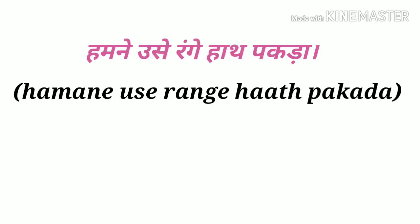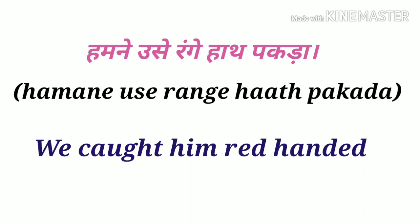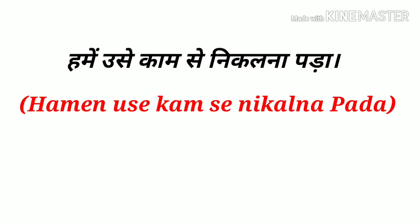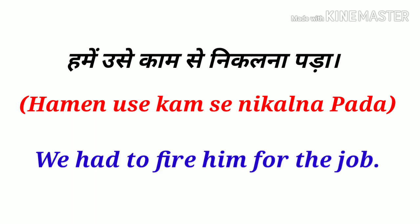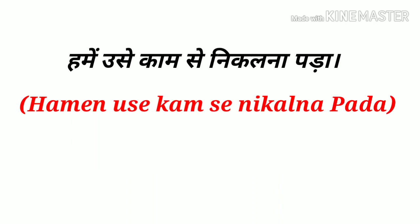Humne usse rang haath pakda — We caught him red-handed. Hume usse kaam se nikalna pada — We had to fire him from the job. Is sentence mein 'had to' ka use kiya gaya hai, jo kisi majburi ya anivariyata ya compulsion ko darshata hai. Agar koi kaam humein majburi mein karna padta hai toh hum 'had to' use karenge. Comment box mein batao 'was to' kis situation mein use karte hain.